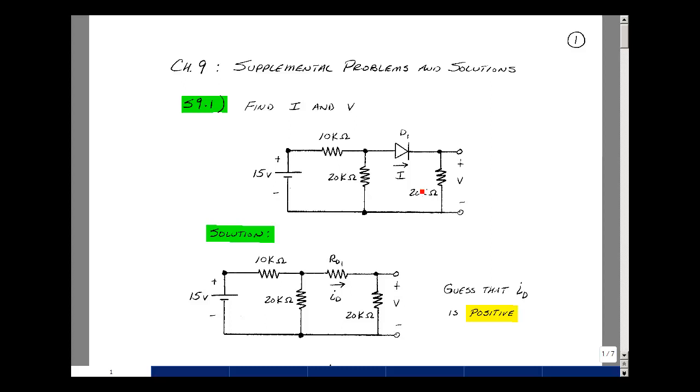Given a circuit with three resistors, a voltage source, and an ideal diode, can you figure out the current in the diode and the voltage across the 20k resistor?